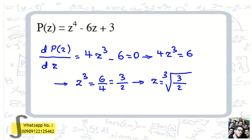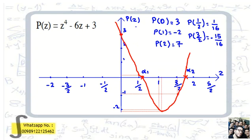For p(z) = z⁴ - 6z + 3, we differentiate to find critical points where p'(z) = 0. We get 4z³ - 6 = 0, so z³ = 3/2, meaning z = ∛(3/2). Now we evaluate: p(0) = 3, p(1/2) is positive (1/16), and p(1) = 1 - 6 + 3 = -2. So at z = 1 we have -2.